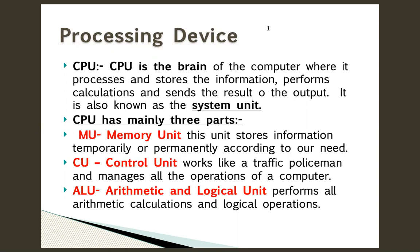In processing devices, we know there is a CPU — it's the brain of the computer where it processes and stores information. It performs all the calculations and gives the result to the output devices. It is also known as the system unit because it performs everything — all the jobs we want to do on the computer.